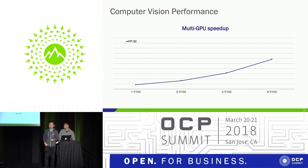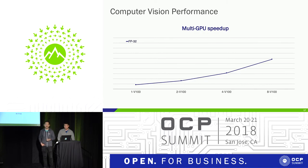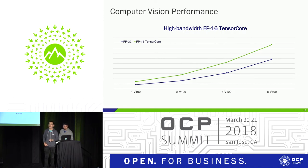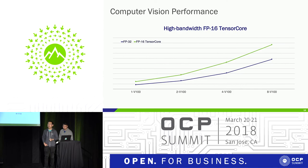And if we enable two, four, or all eight GPUs in the Big Basin Volta platform, we can achieve almost linear scaling in the training throughput. The Volta GPU also comes with high-bandwidth FP16 Tensor Core technology. By enabling this new technology, we can further boost the training throughput.